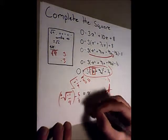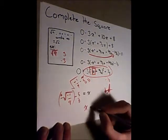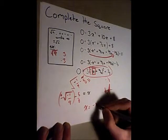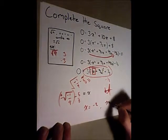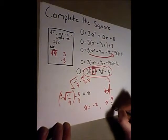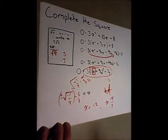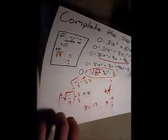We plug this in, do some math, and we find that x is equal to negative 2, and x is also equal to negative 4 over 3. And those are our roots. And that's how you solve it by completing the square.